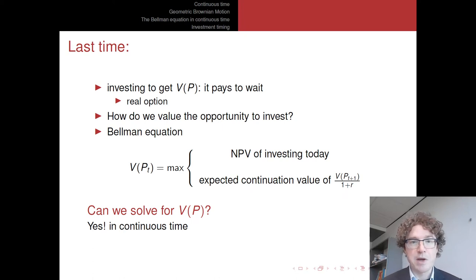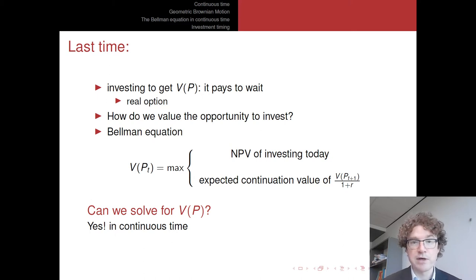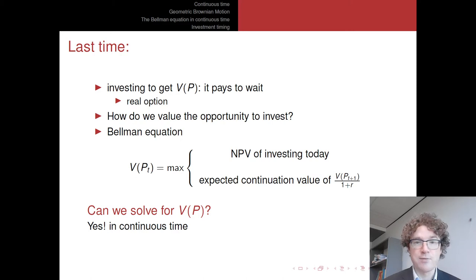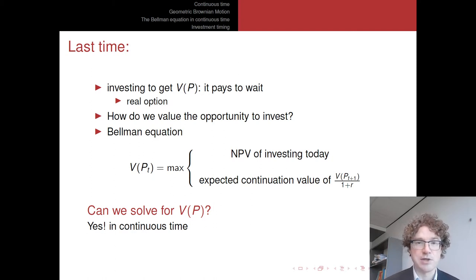Last time we saw that if you have an investment project in which you can invest to get some value, which depends on some price which might be moving up and down in the future, then it might actually pay to wait during the investment. The reason is there is some real option value. If you wait, you will see whether the price will go up or down. If price goes down, you might be happy not to have invested beforehand. If price goes up, you might actually want to make the investment. So this asymmetry might create some option value.